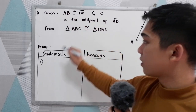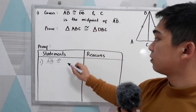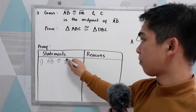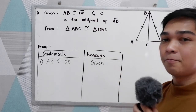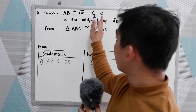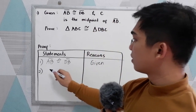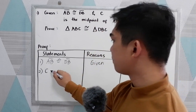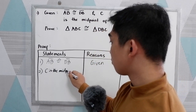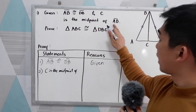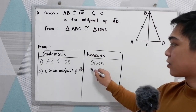Our first given is AB is congruent to DB. The reason is: given. The second given is C is the midpoint of AD. That is also given.